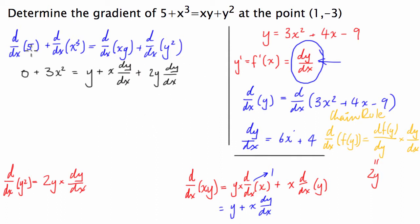And now guys what we're going to do is we're going to simplify this. So I'm going to take this y over to the other side and I'm going to have 3x squared minus y is equal to x dy/dx plus 2y dy/dx. Now it's pretty easy to see that we have a common factor here.